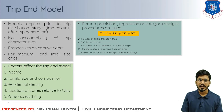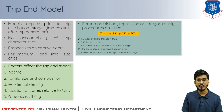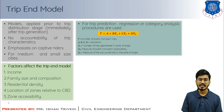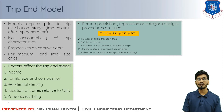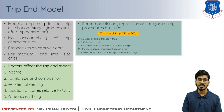We have a typical trip end model equation which describes the public transport trips: T = a + bX₁ + cX₂ + dX₃. Here T denotes the number of public transport trips; a, b, c, d are constants. X₁ is the number of trips generated in the zone of origin; X₂ denotes the measure of public transport accessibility; X₃ is the measure of car ownership in the zone of origin.